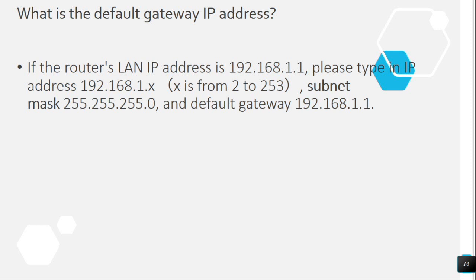Question 15: What is the default gateway IP address? If the router's LAN IP address is 192.168.1.1, type in an IP address from 192.168.1.2 to 192.168.1.253, subnet mask 255.255.255.0, and default gateway 192.168.1.1.